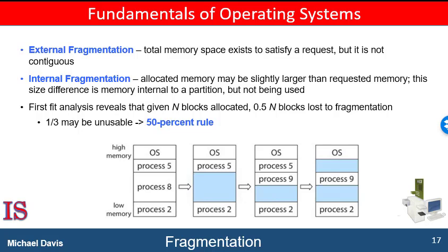Whether we are using first fit or best fit strategy can affect the amount of fragmentation — first fit is better for some systems, whereas best fit is better for others. Consider that image again at the bottom of the slide: processes 5 and 8 have both finished, leaving two slightly different sized blocks. Let's assume that process 10 will fit either available block. Whether we are using first fit, best fit, or worst fit, the algorithm selects the larger block below process 9 for process 10. Another factor is which end of a free block is allocated — top or bottom? In our example, where is the leftover piece going to be: above process 10 or below process 10? It is highly unlikely that process 10 will fit that hole exactly, so we will still have some degree of external fragmentation.